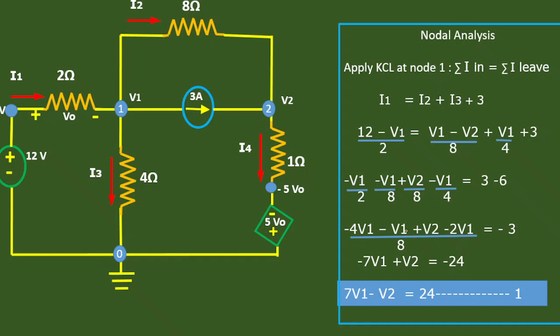Taking the common denominator, we write this as minus 4V1 minus V1 plus V2 minus 2V1, all over 8, equal to minus 3. Cross-multiplying gives minus 7V1 plus V2 equal to minus 24. Changing signs, this becomes our first equation: 7V1 minus V2 equal to 24.